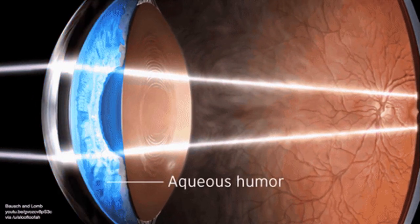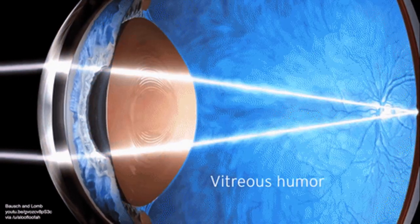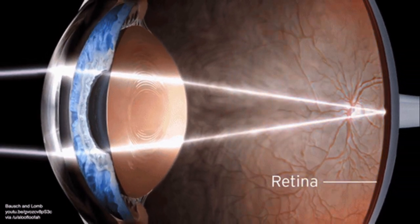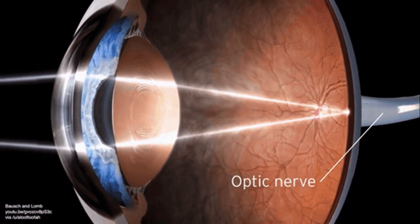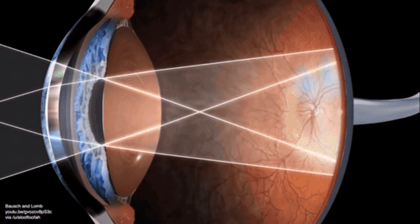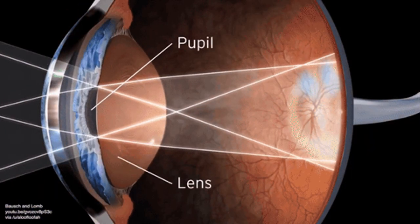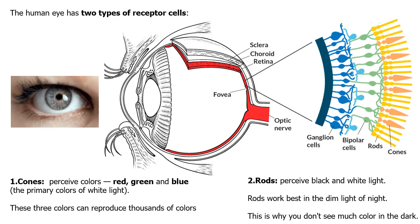Your eye is a miracle of nature. It's one of the most complex organisms on your body. Light comes in and the receptors in the back of your eye enable you to notice things like the different frequencies of light and different colors. There are two different types of receptors in your eyes.